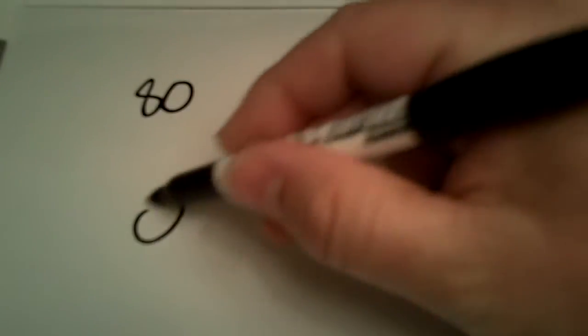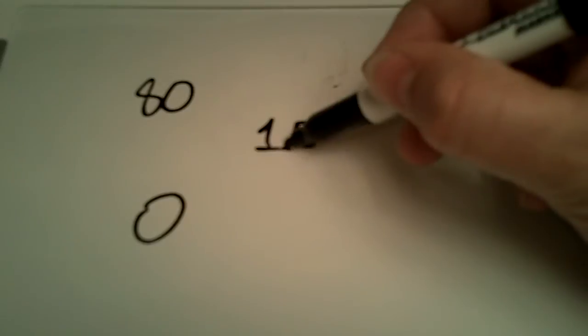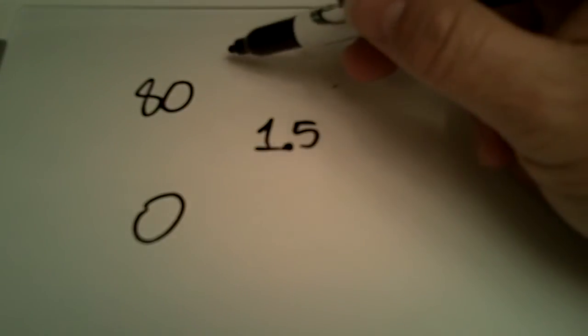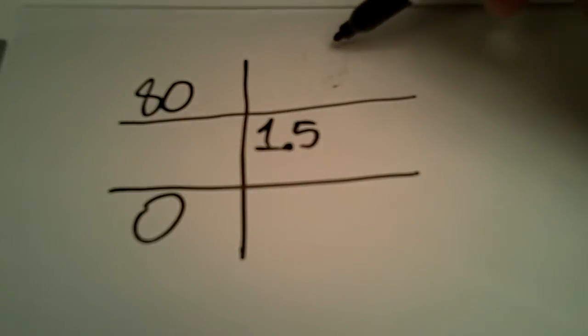So let's go to the whiteboard and we'll talk about this one. What I would recommend — and there are a couple of ways I'm going to show you — is to tackle this one with an alligation. The reason why is because we have an 80% solution, a 0% solution, and we're trying to get a 1.5% solution. So we'll go ahead and draw our tic-tac-toe grid.